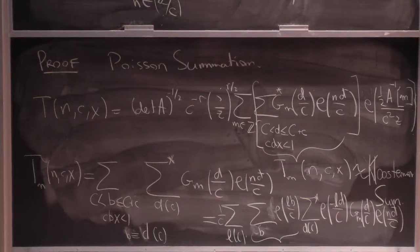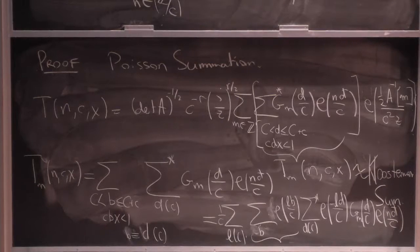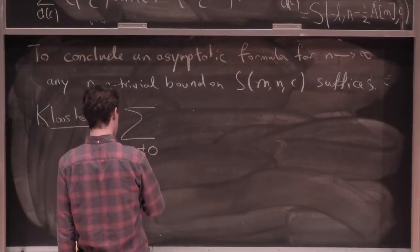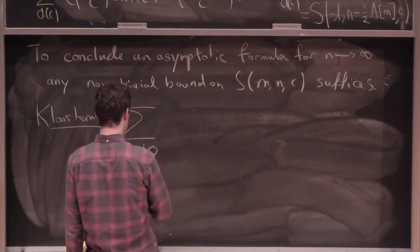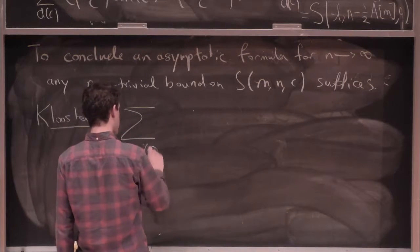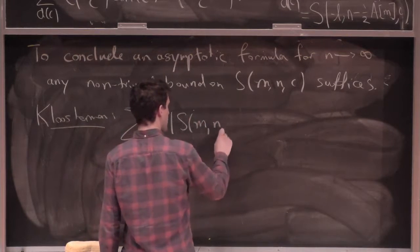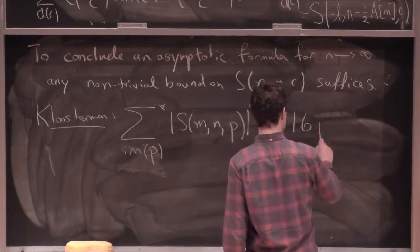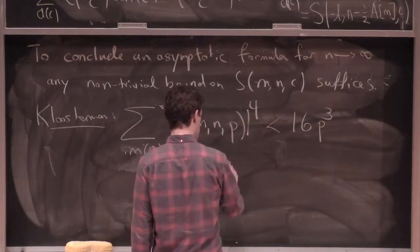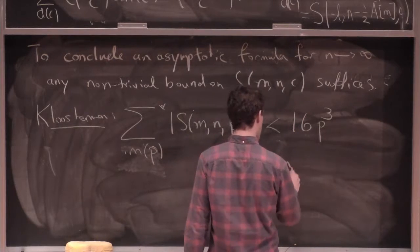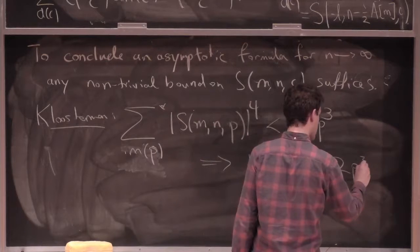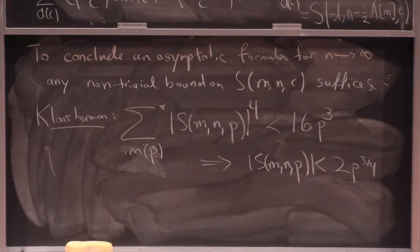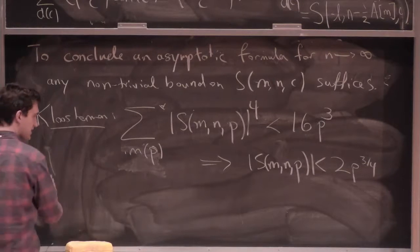What Kloosterman did to bound these sums was use the method of moments. He took a sum over all m not zero, mod p, of |S(m, n, p)|², where p is a prime, and showed this was less than 16p³. From this you can conclude that at least one S(m,n,p) satisfies |S| < 2p^(3/4) — compared to the trivial bound of p. Kloosterman succeeded this way.